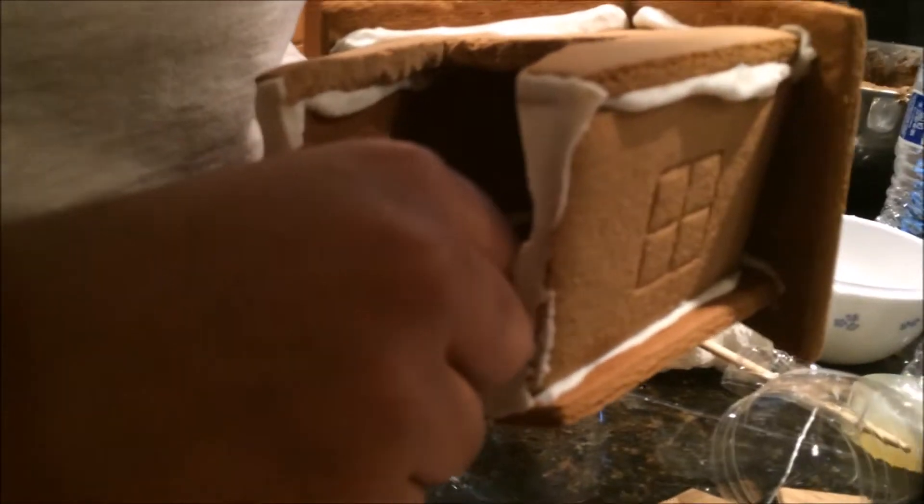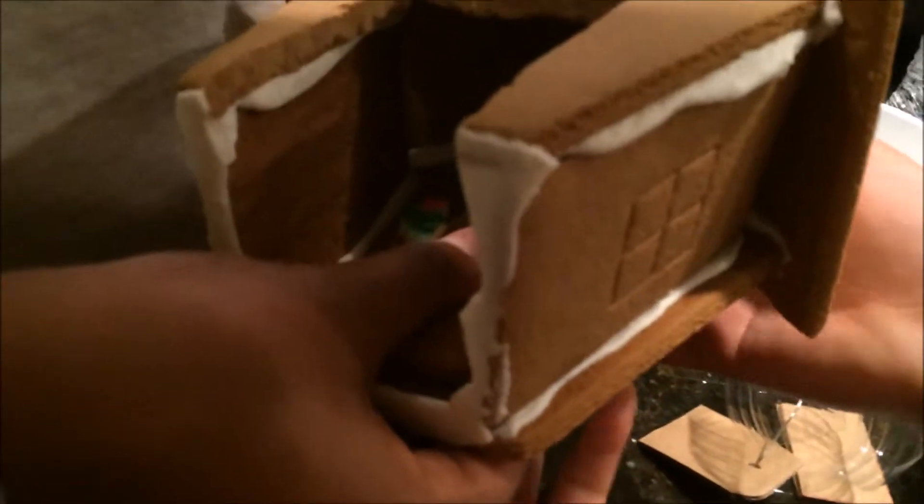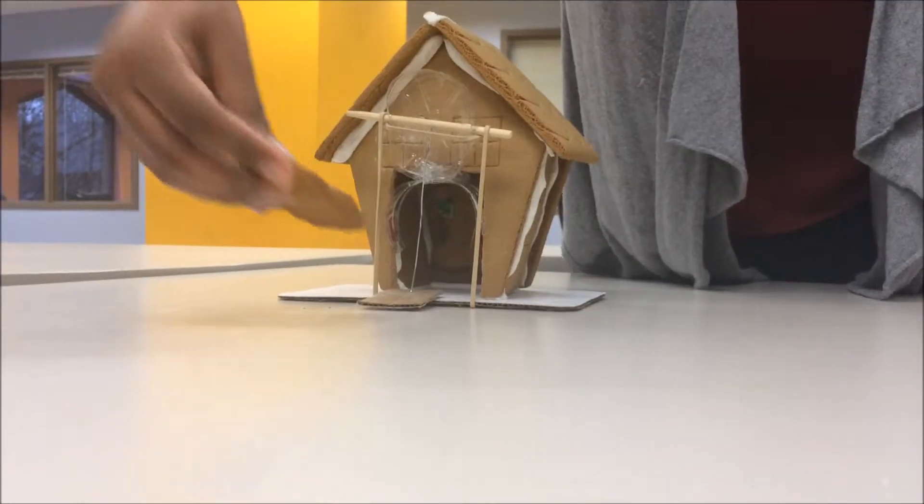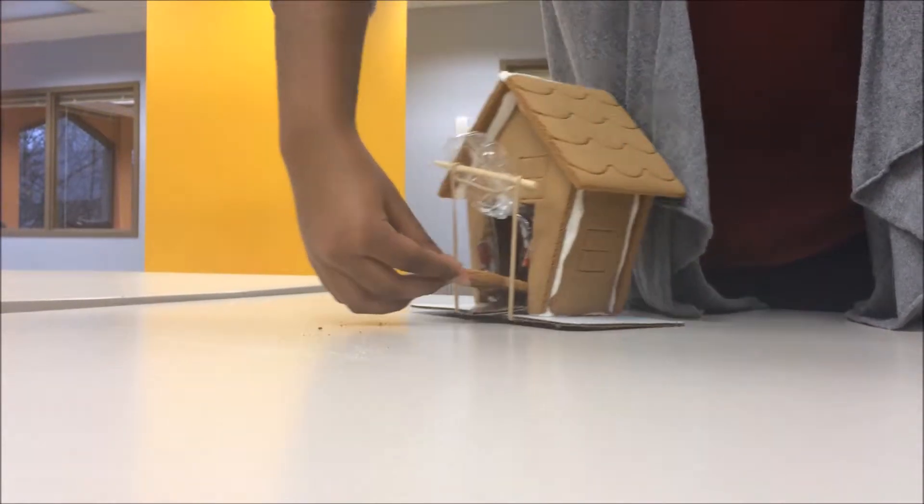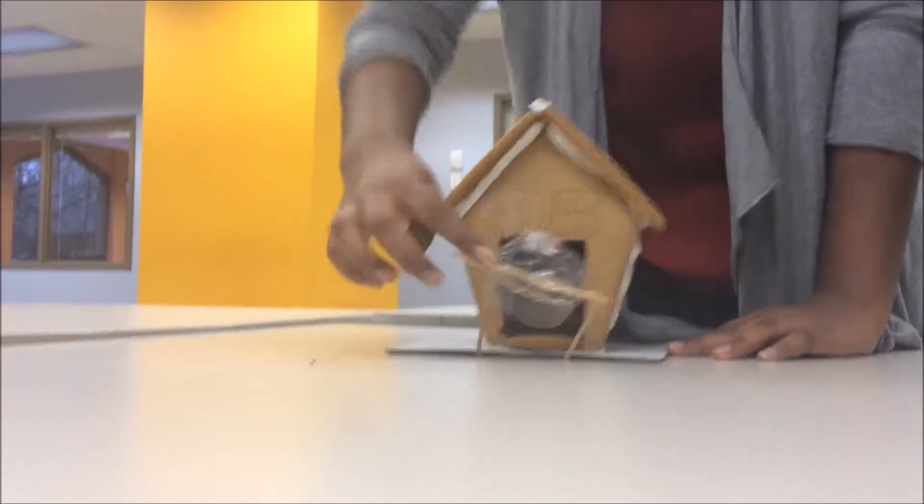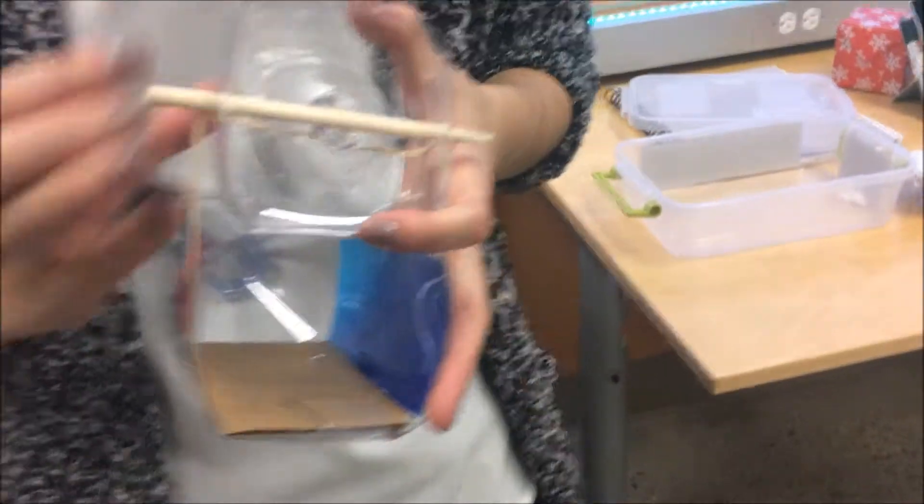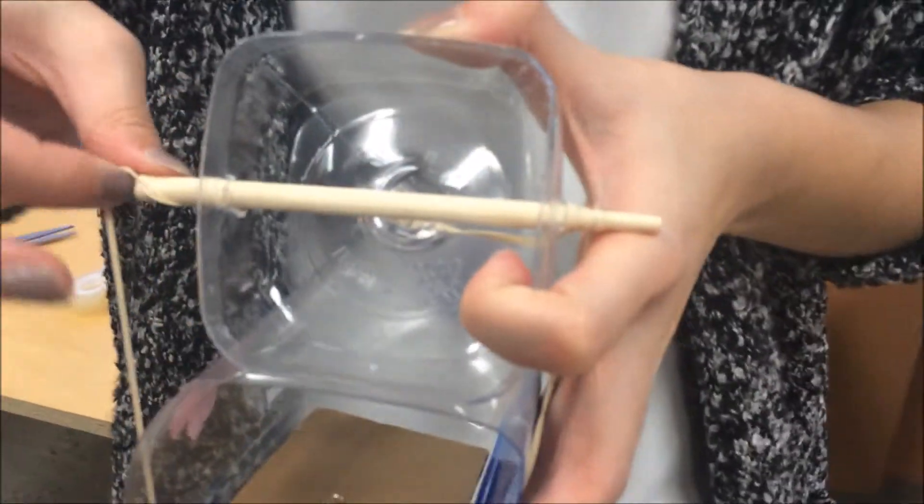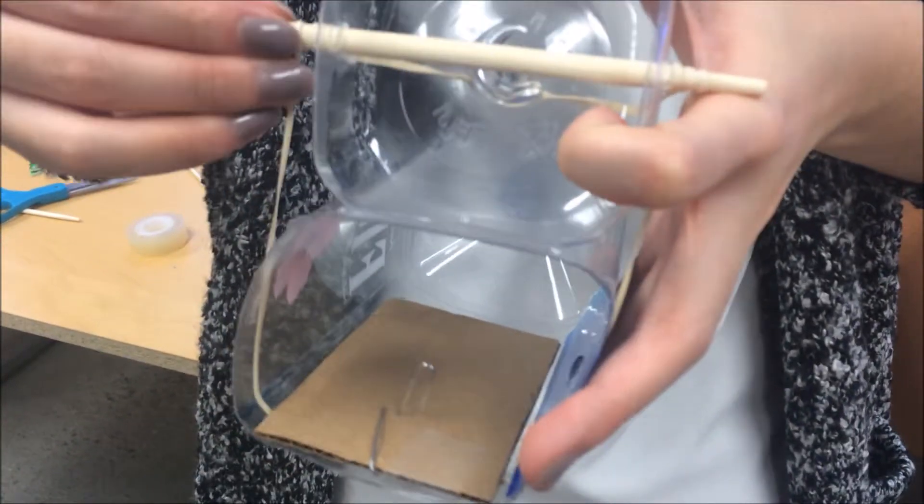Within the project, certain constraints were set in place for students to work around. One of the limitations was that only one hand gesture could be made during the trapping process to set motion in place. Everything else involved in the capturing of the gingerbread man had to be done by the trap itself.